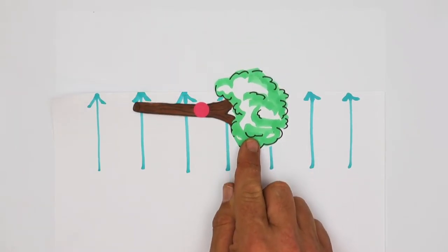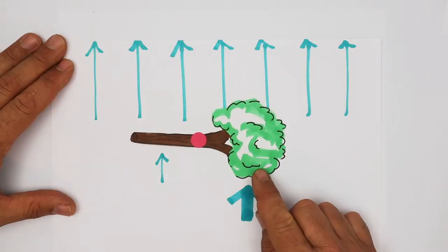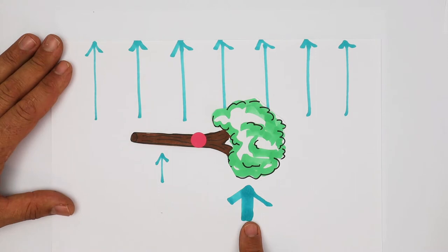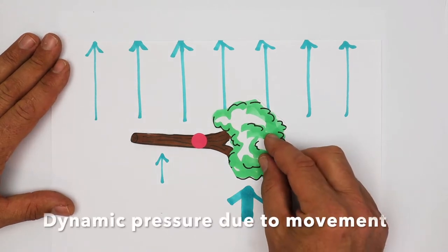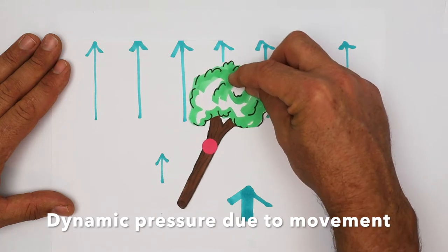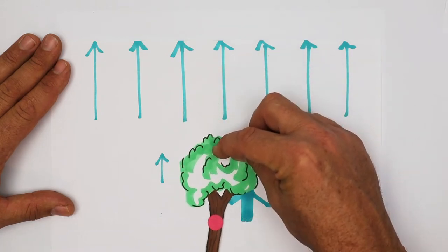As the branch falls down, it pushes air out of the way. But the air also pushes back slightly. And this is called dynamic pressure. The more surface area, the bigger the dynamic pressure. Because there's more surface area on the right-hand side, that's the way it'll spin as it falls.